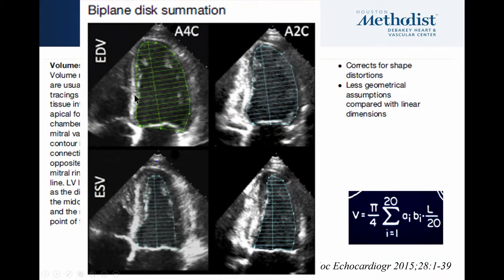In this example, the apex in the two-chamber view is also pointing toward the transducer — so these were very well acquired. If you're going to do biplane, you need to make sure both four-chamber and two-chamber are properly done; otherwise you could have errors. Also notice the way the tracing is made: it excludes trabeculations within the cavity. We learned this two ways — first from contrast, which expanded the whole cavity and showed that traditional tracings including trabeculations created smaller chambers than in reality; and second from comparisons with MRI.